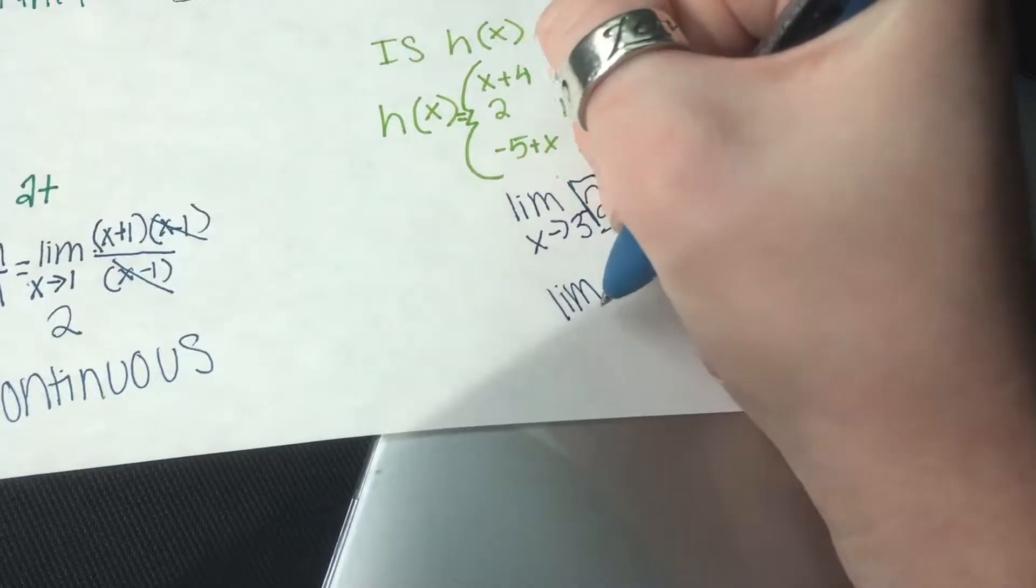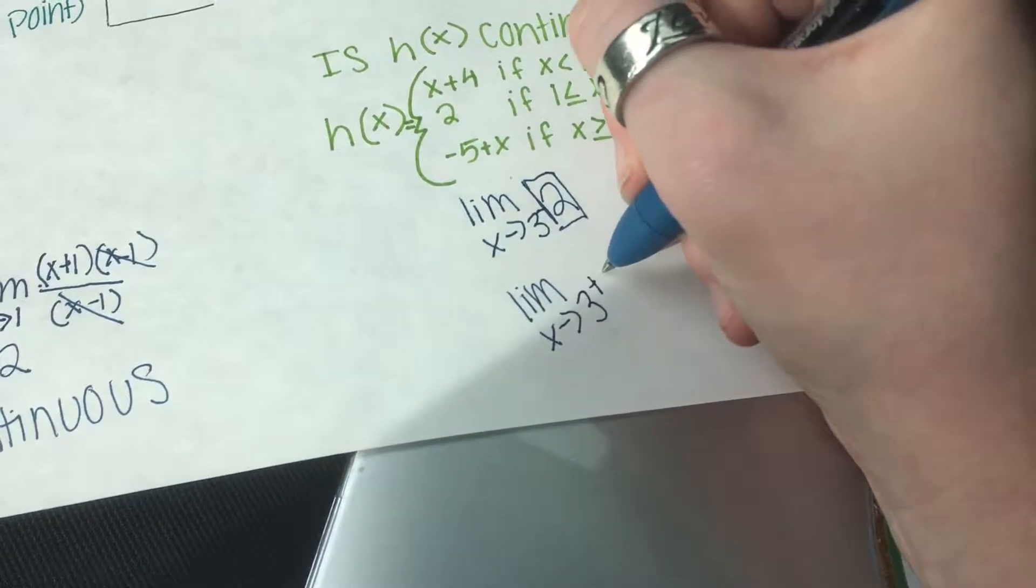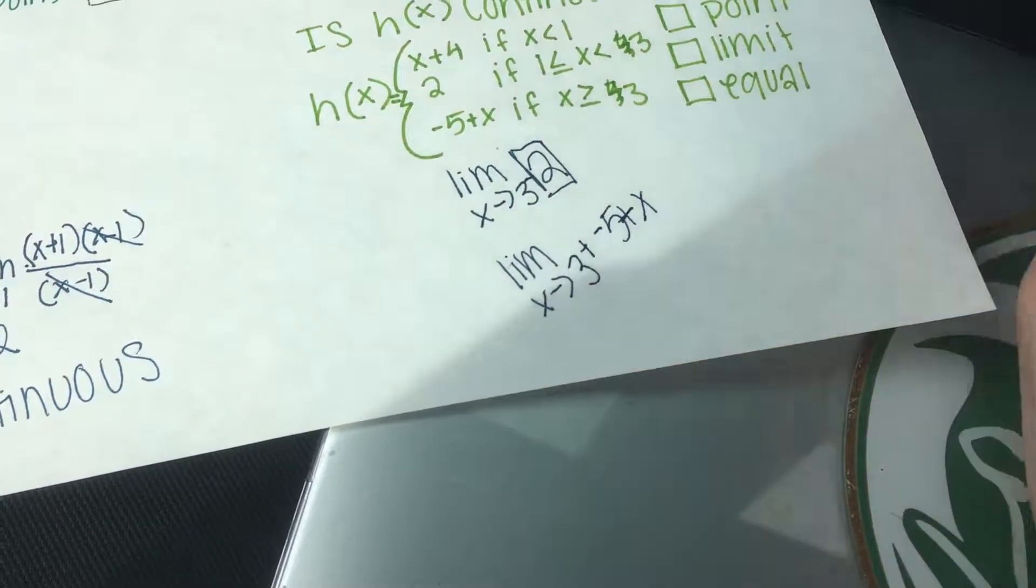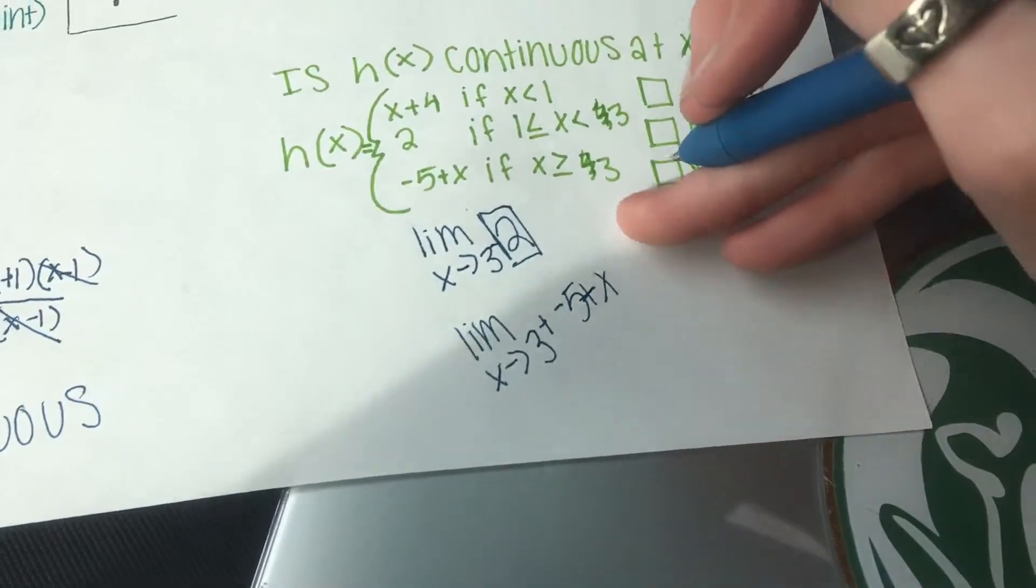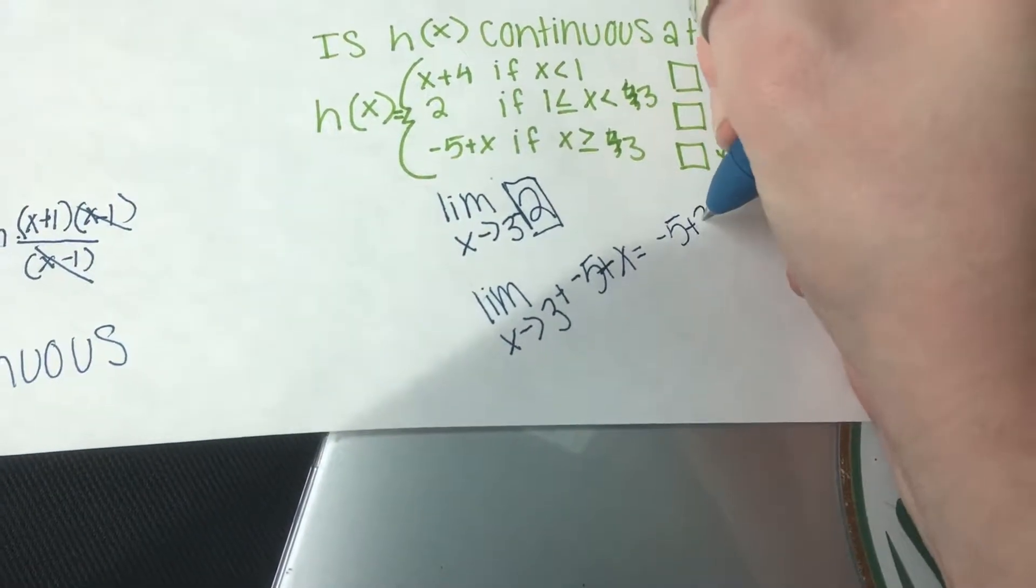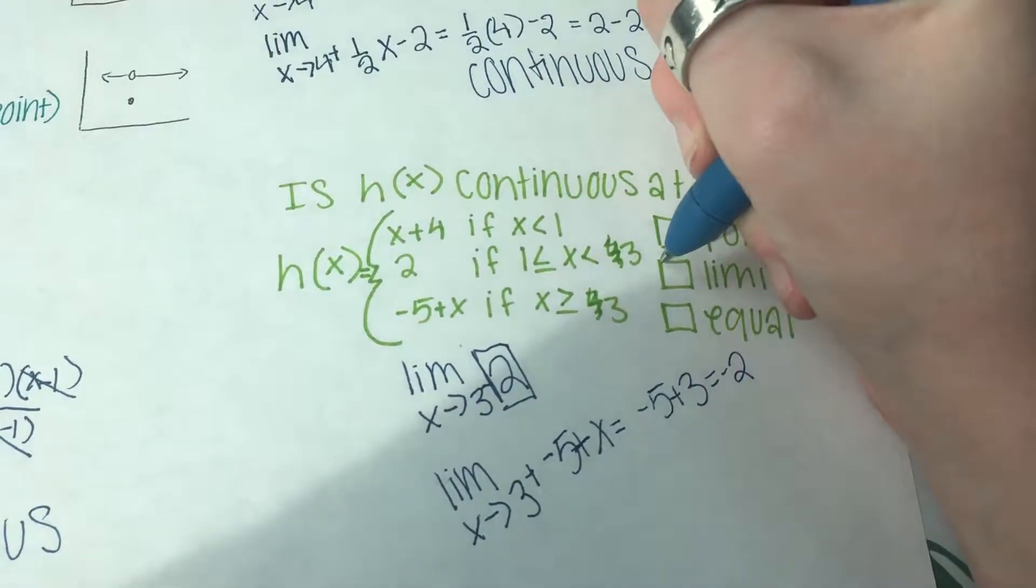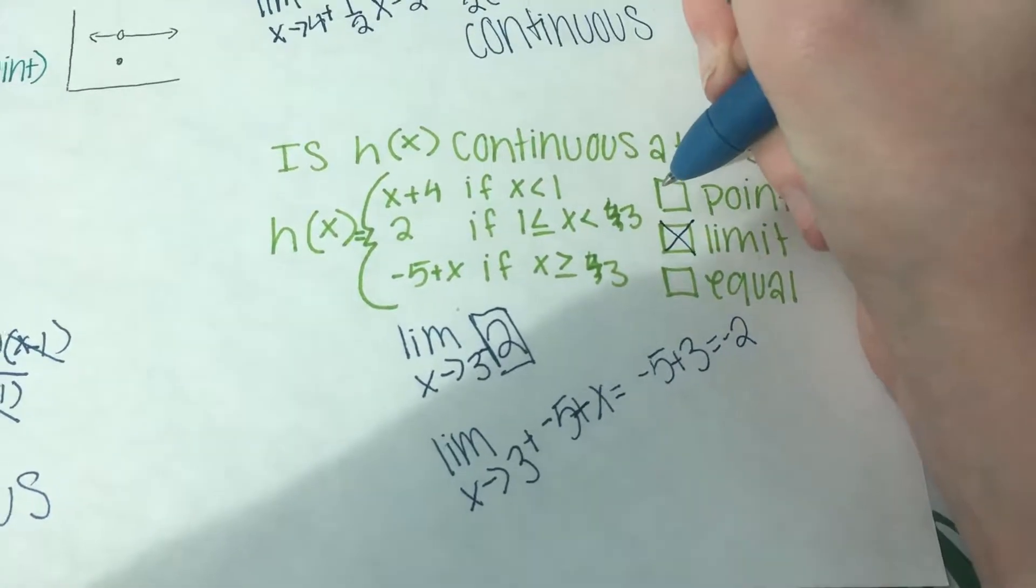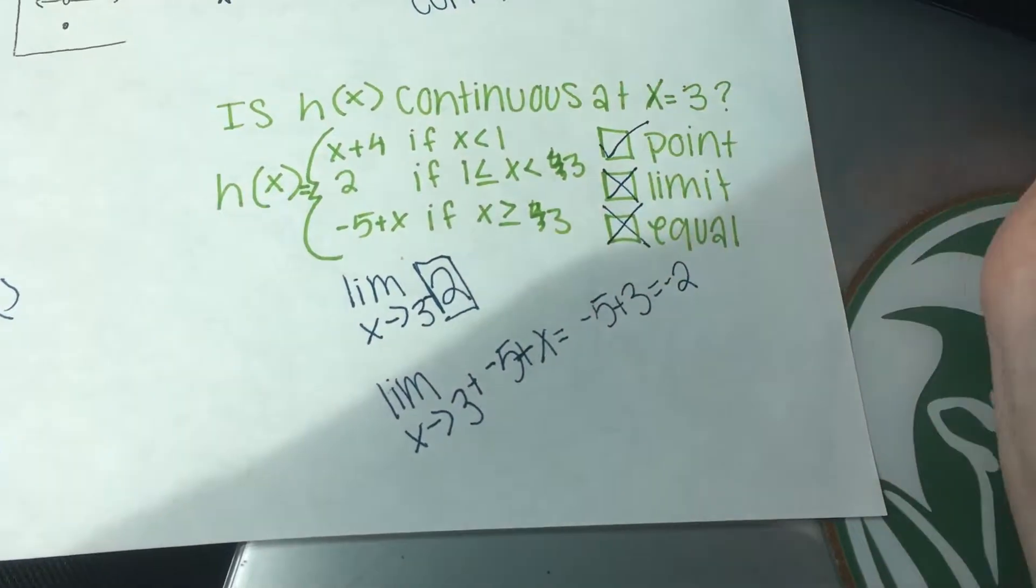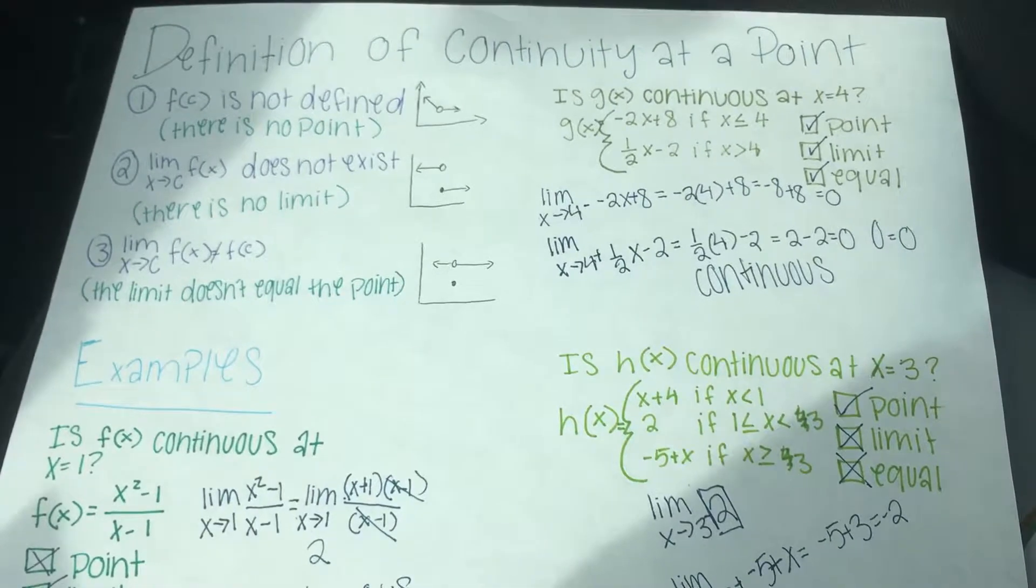And so then if we look from the right, so the limit as x approaches 3 from the right, it is negative 5 plus x. And so then we solve and we get negative 5 plus 3, which gives us negative 2. Well, negative 2 and positive 2 do not equal each other. So there is no limit, but there is a point. But since there's not a limit, they do not equal each other. And so that's how you figure out if a point is continuous.